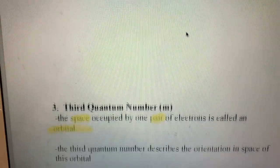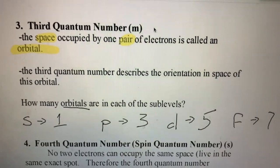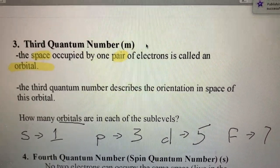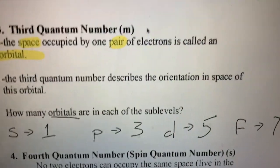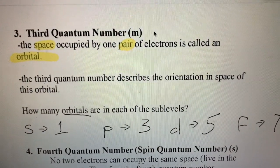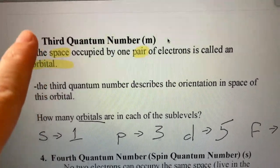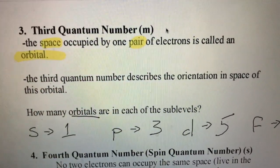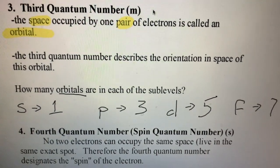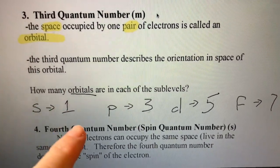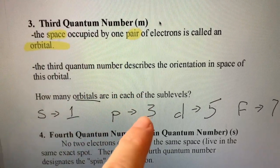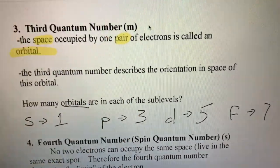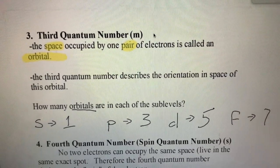Our third quantum number, which gets the abbreviation lowercase m, we're not going to use a whole lot. It's really focused on the orientation in space of what we call orbitals. If you go on to take AP chemistry, you'll talk more about this. But what we want to take away from it is this term orbital. Orbital means a pair of electrons. The space occupied by a pair of electrons is called an orbital. So how many orbitals are in each sublevel? s can hold two electrons, so that's one pair. p can hold six electrons - that's three pairs. d can hold 10, that's five pairs. f can hold 14, that's seven pairs. Nice and straightforward.